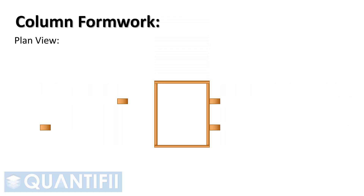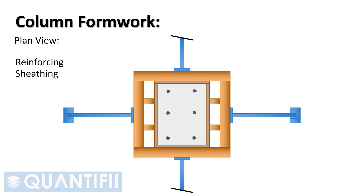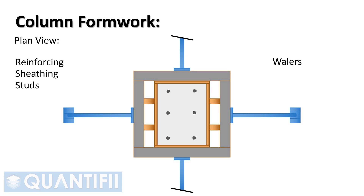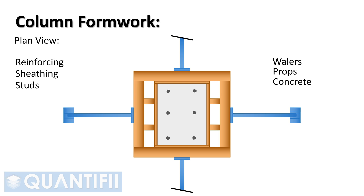Let's work through the plan view of a column. Firstly, the reinforcing will be fixed in place. Next, we need to build up the sheathing, studs, and whalers. Once we have made up and erected the formwork in place, we can fix the push-pull props. We can then pour the concrete into the form.